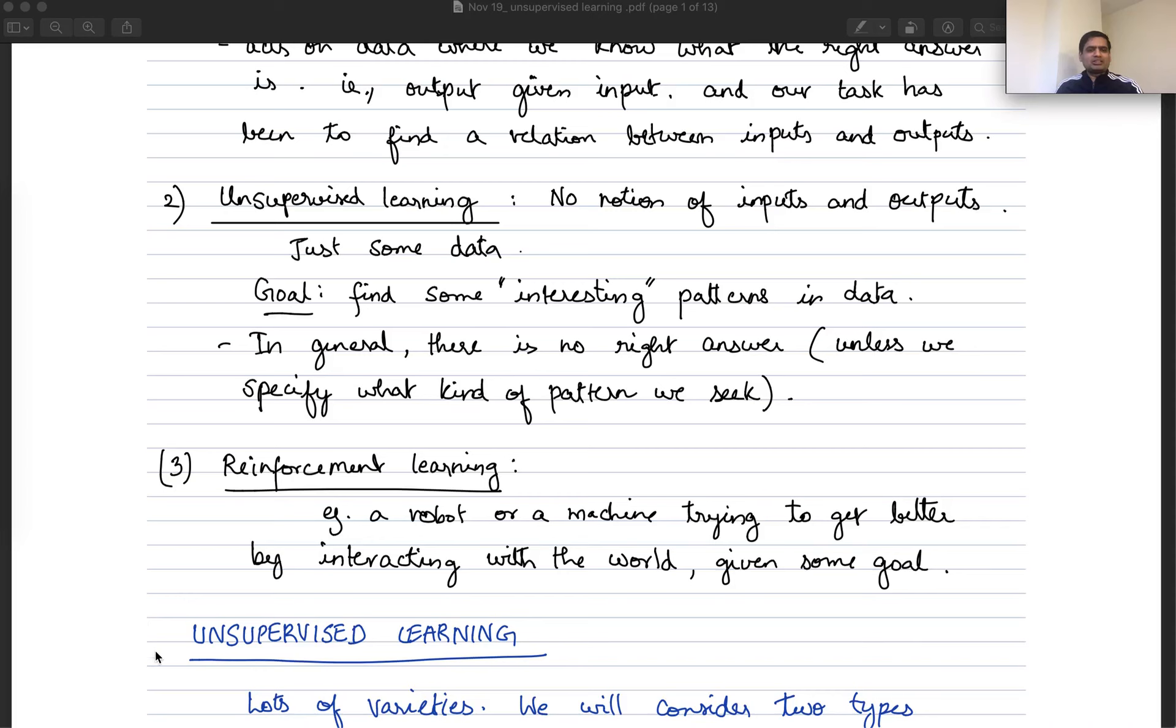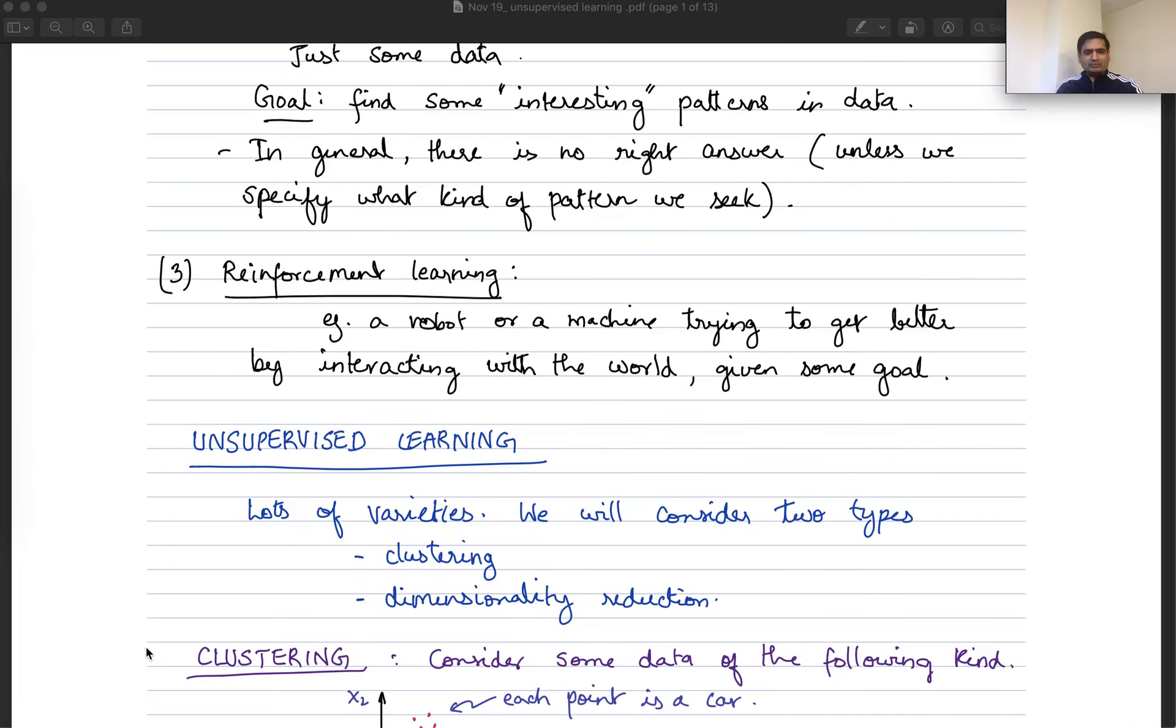So let's jump into unsupervised learning. There's lots of varieties of unsupervised learning. We will consider primarily two types of unsupervised learning. One is called clustering, another is called dimensionality reduction. These are broad terms, and then there are specific methods to do clustering or dimensionality reduction.